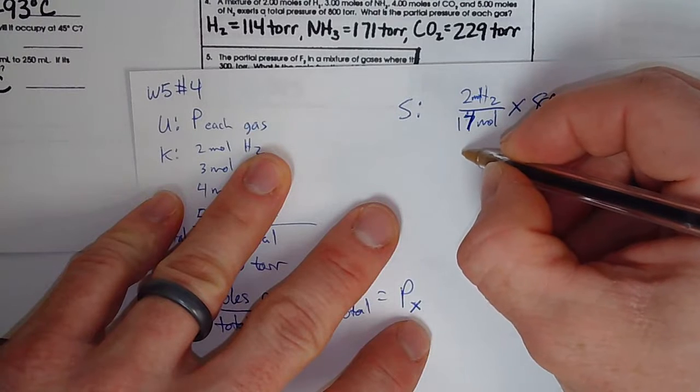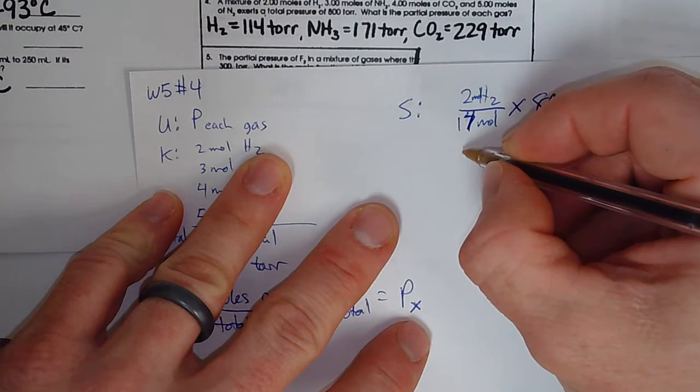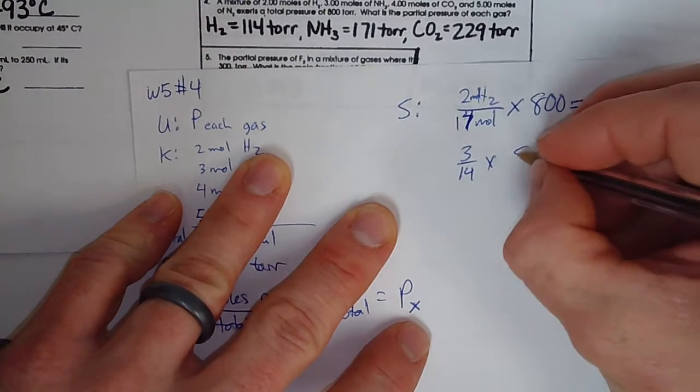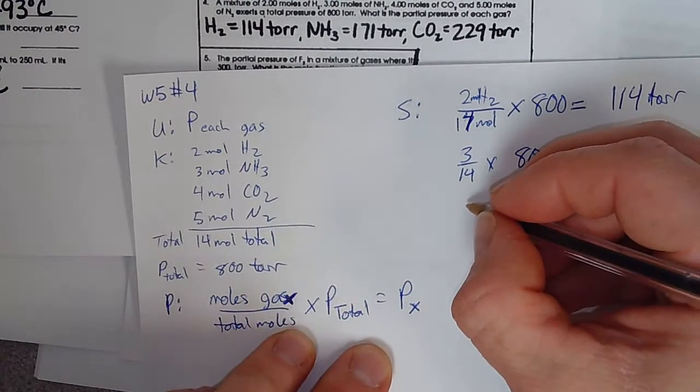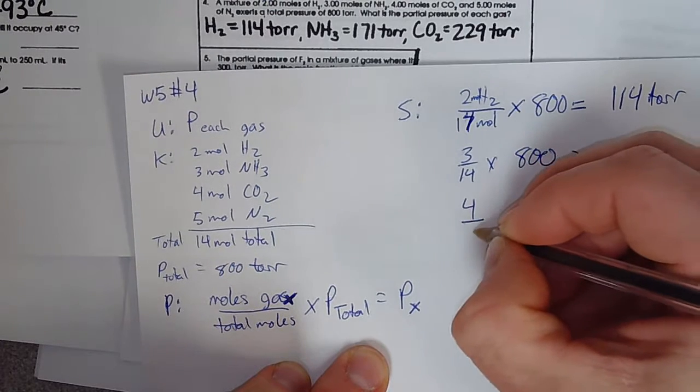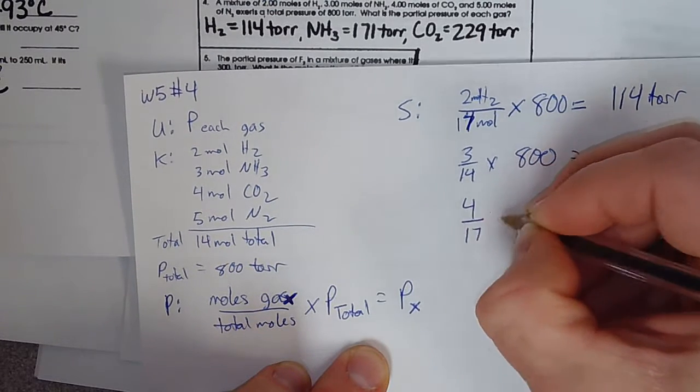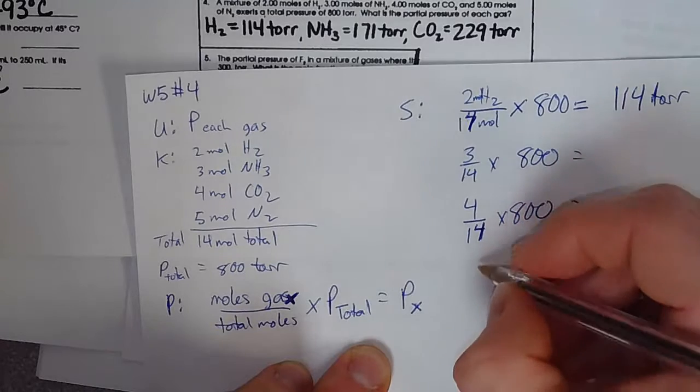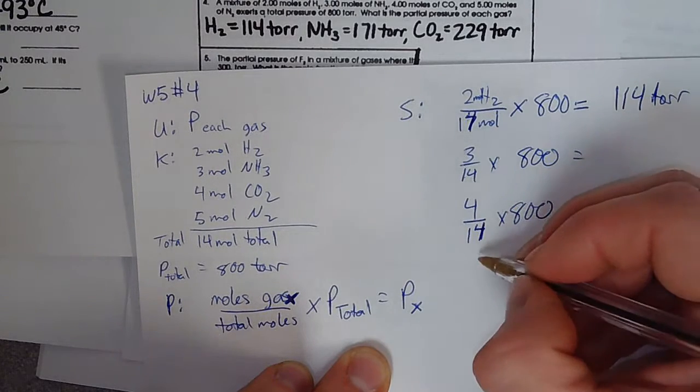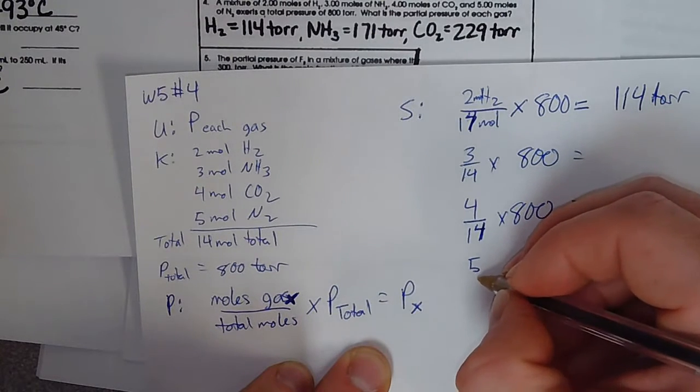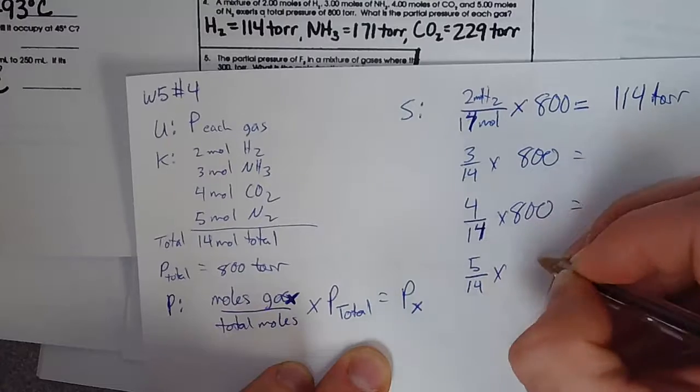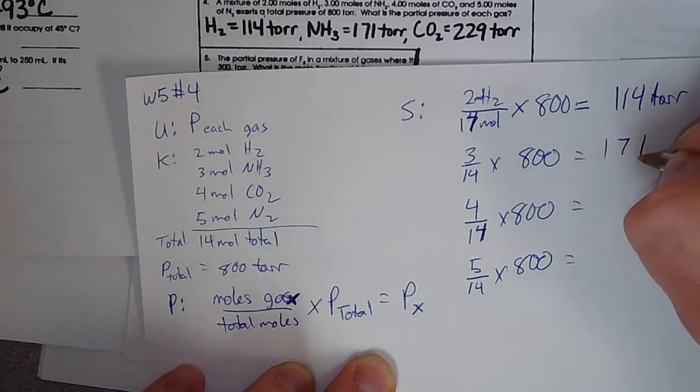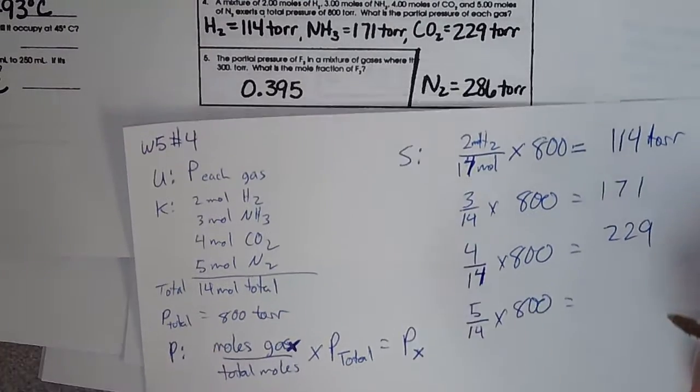Oh snap, I used the wrong number, 14. 2 divided by 14 times 800. That gives us 114. We'll repeat that. So ammonia is going to be 3 divided by 14 times 800. And then we'll carry that on. Carbon dioxide is 4 out of 14 times 800. I keep saying 17, sorry. I don't know where I'm getting the 17 from, but nonetheless. And then the last one, the nitrogen is going to be 5 out of 14 times 800. All right. And those will come out to 171, 229, and 286.